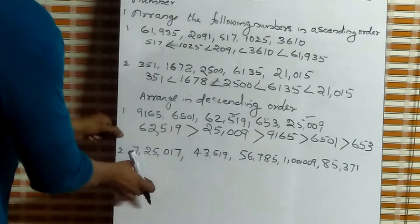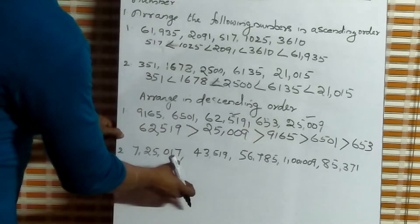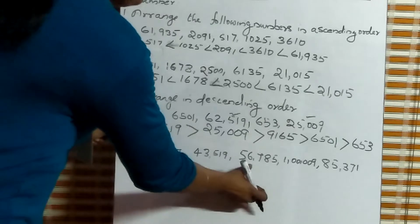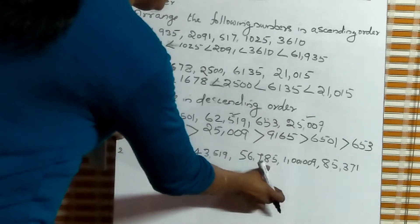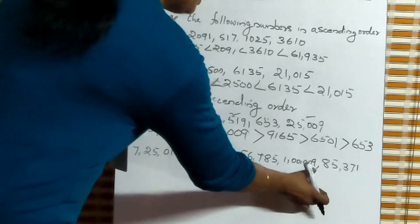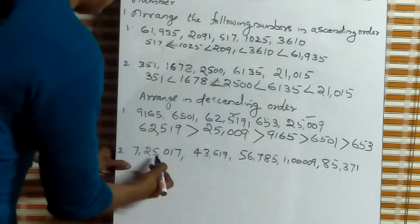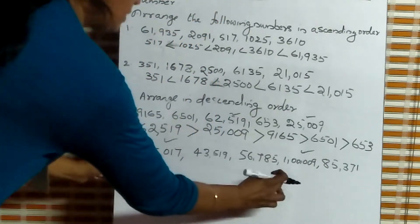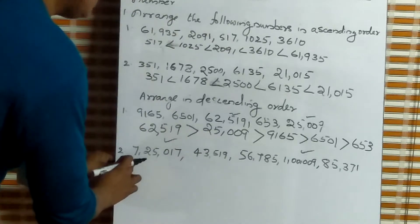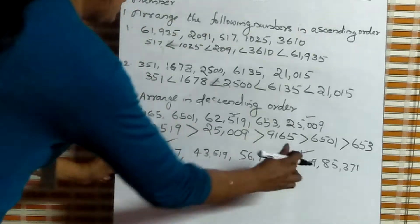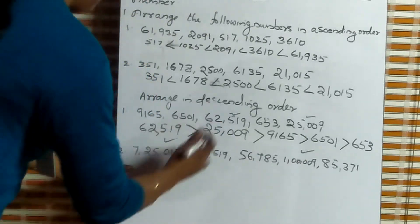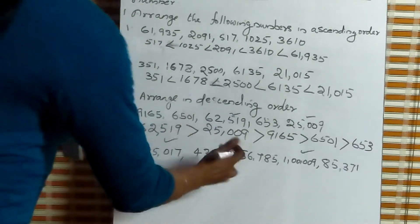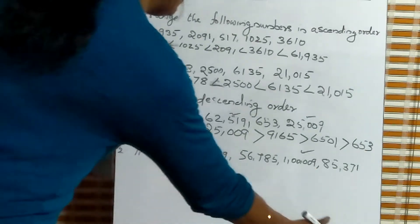Second question. The numbers are: 7,25,070; 43,519; 56,785; 199; and 7,336 — which is a six-digit number. This is also a six-digit number. From this, the left-most digit: which is the greatest? Seven. And which is the least number here?